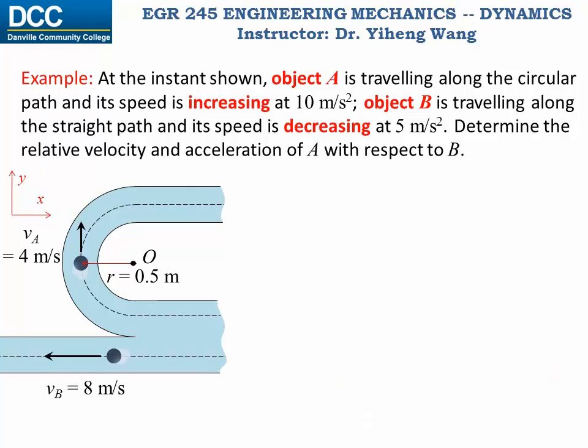For acceleration, don't forget object A is doing curvilinear motion. Therefore it has two acceleration components, At the tangential acceleration, and An the normal acceleration, which always points towards the center of curvature. Since we know that the speed of A is increasing at 10 meter per second squared, and that is the tangential acceleration, because remember the tangential acceleration equals in scalar form dv/dt, and it describes the change in speed. So Aat is simply 10j meter per second squared.